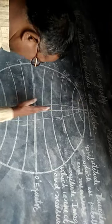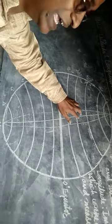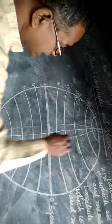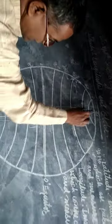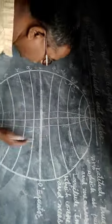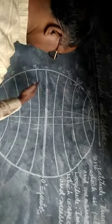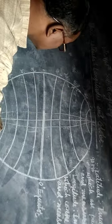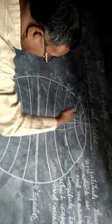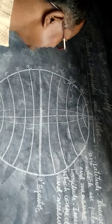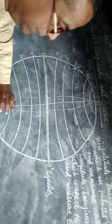बीच की जो जीरो डिग्री लाइन है इसको Prime Meridian कहते हैं, या Greenwich Meridian कहते हैं। यह Prime Meridian 90 डिग्री North और 90 डिग्री South को Connect करती है। इसके East में Eastern Hemisphere हुआ। This line connects north-south and measures east, so this line is called longitude.